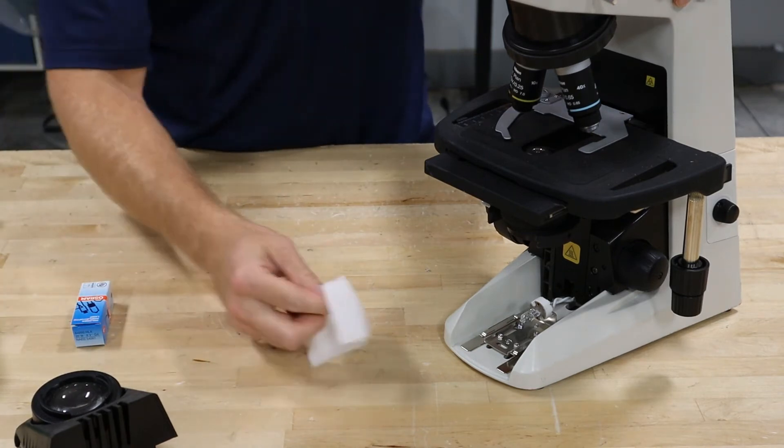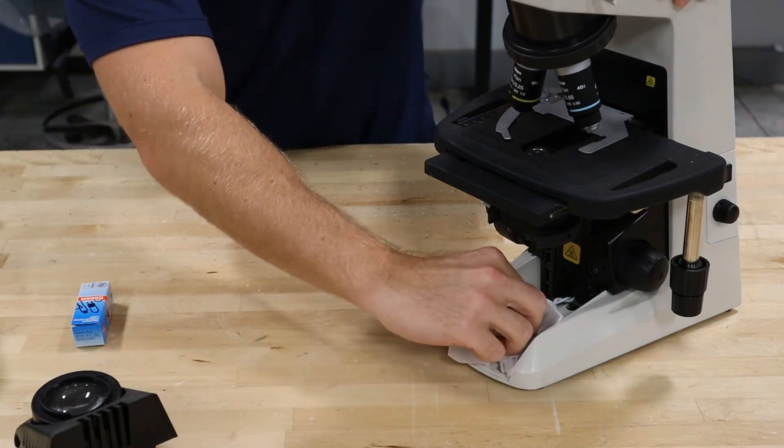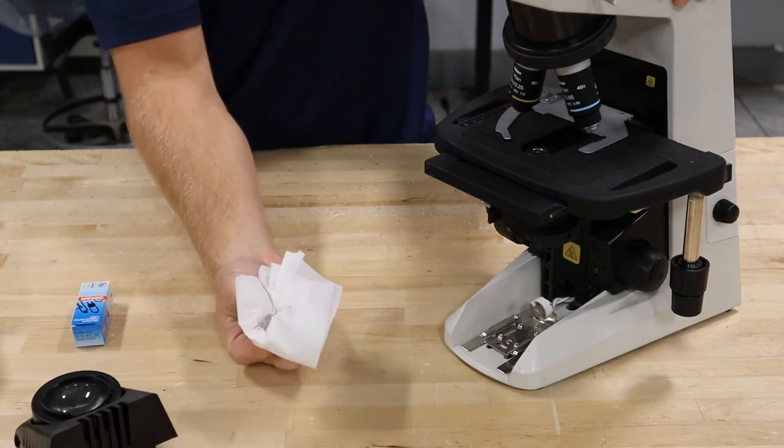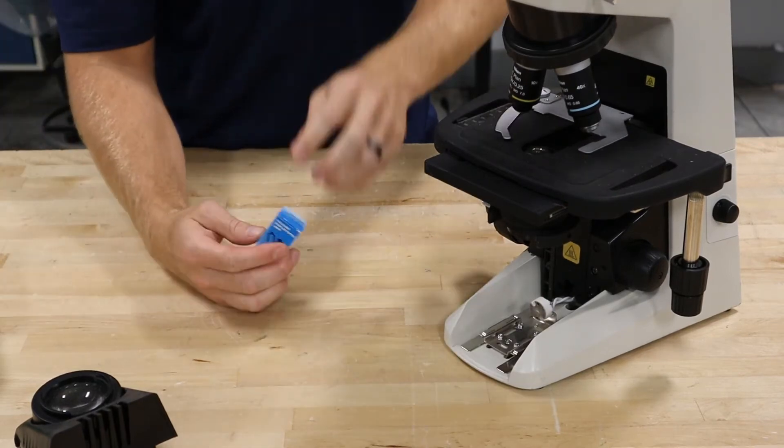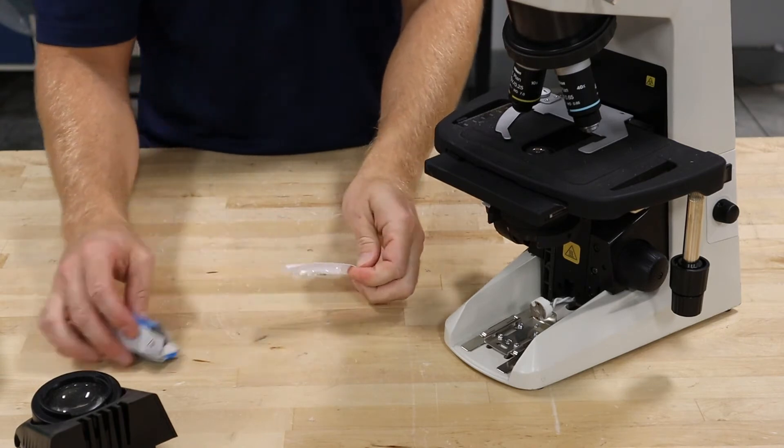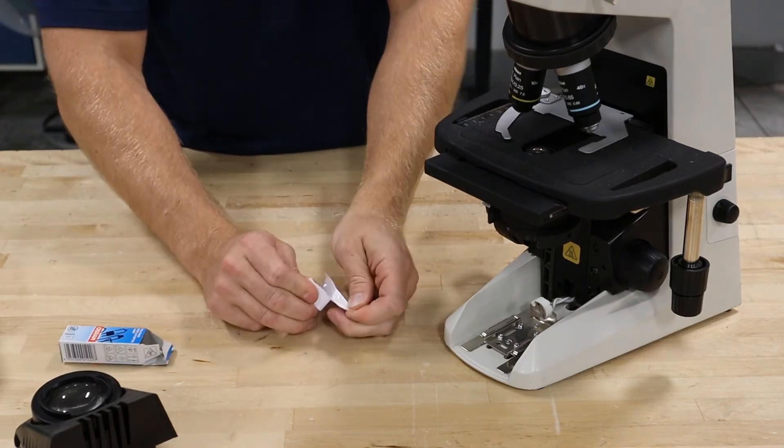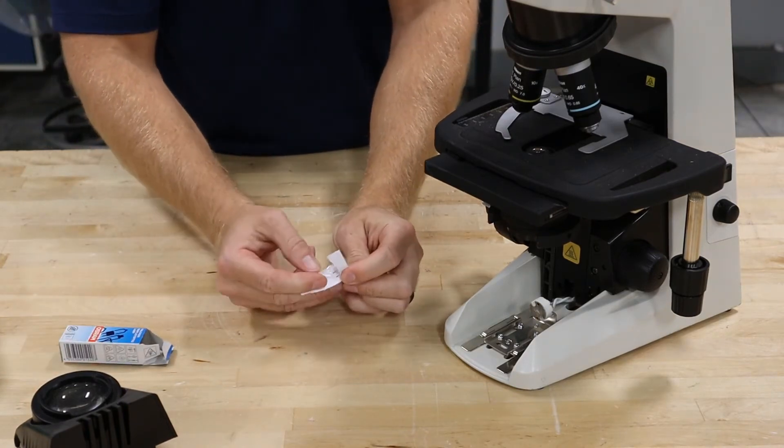I'll use a chem wipe and then I'll take the bulb, grab it with the chem wipe, and then remove the bulb. Then I'll reopen the 6-volt, 20-watt bulb, peel the package open.